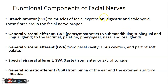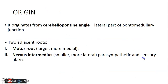The functional components of facial nerve include: branchial motor — facial visceral efferent to the muscles of facial expression, digastric, and stylohyoid. General visceral efferents are the parasympathetics to submandibular, sublingual, lacrimal, palatine, pharyngeal, oral, and nasal glands. There is general visceral afferent — sensory from nasal cavity, sinus cavities, and part of soft palate. Special visceral afferent for taste from anterior two-thirds of the tongue, and general somatic afferent from the pinna of the ear and external auditory meatus.